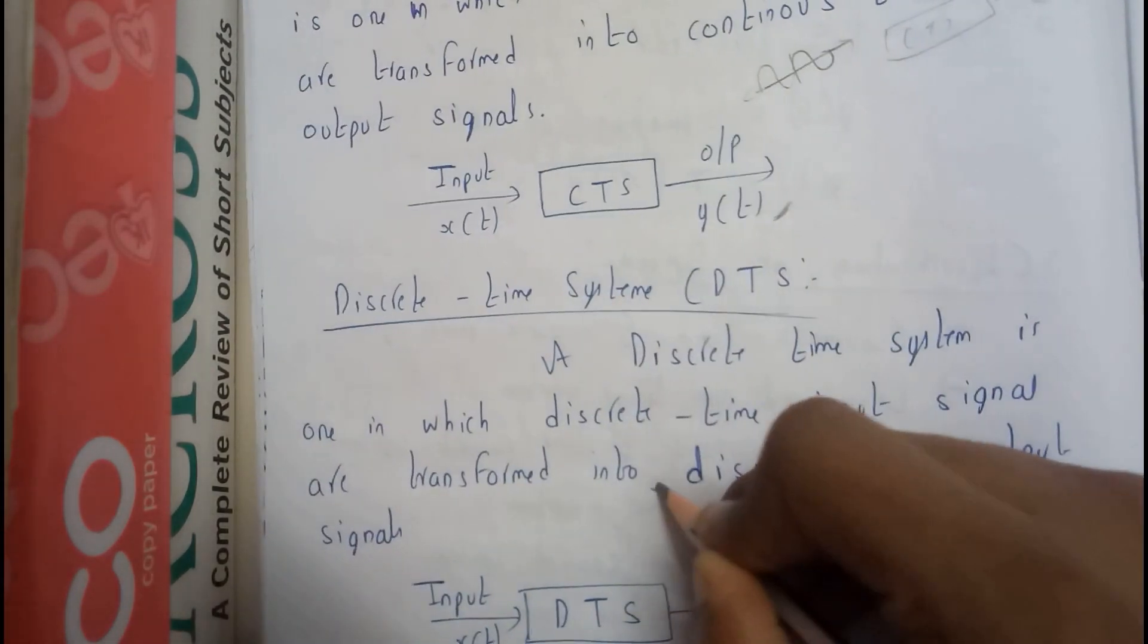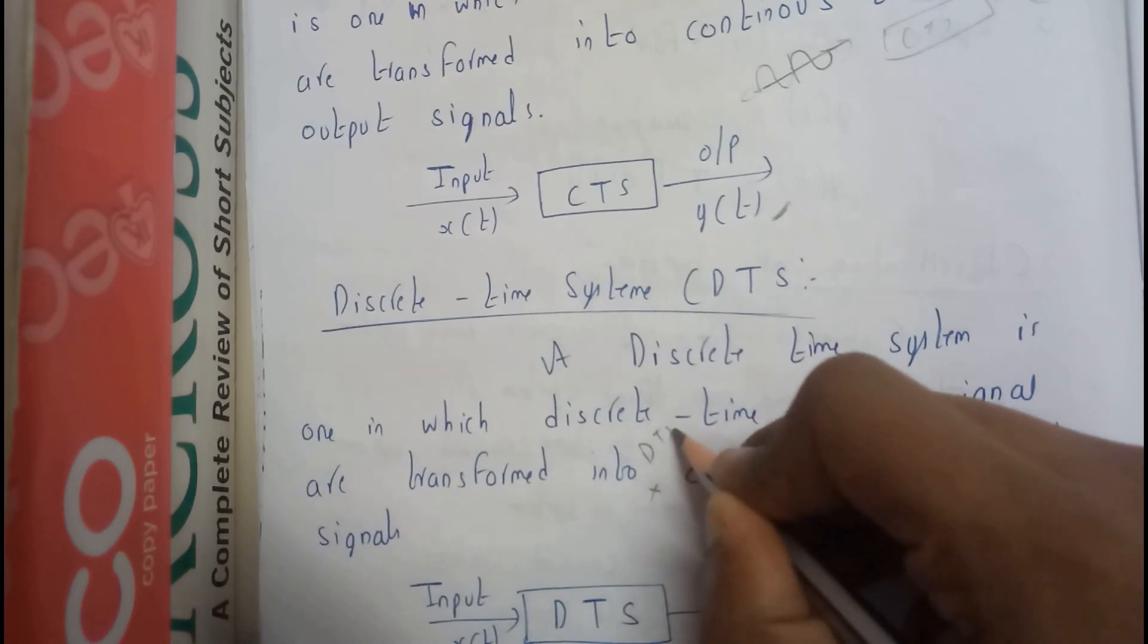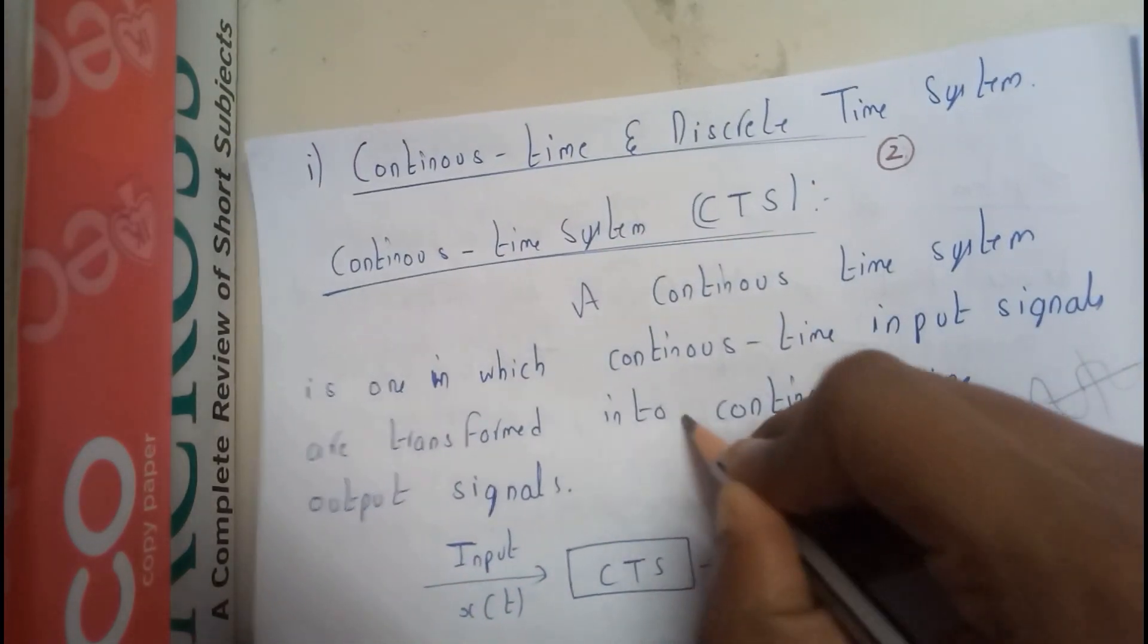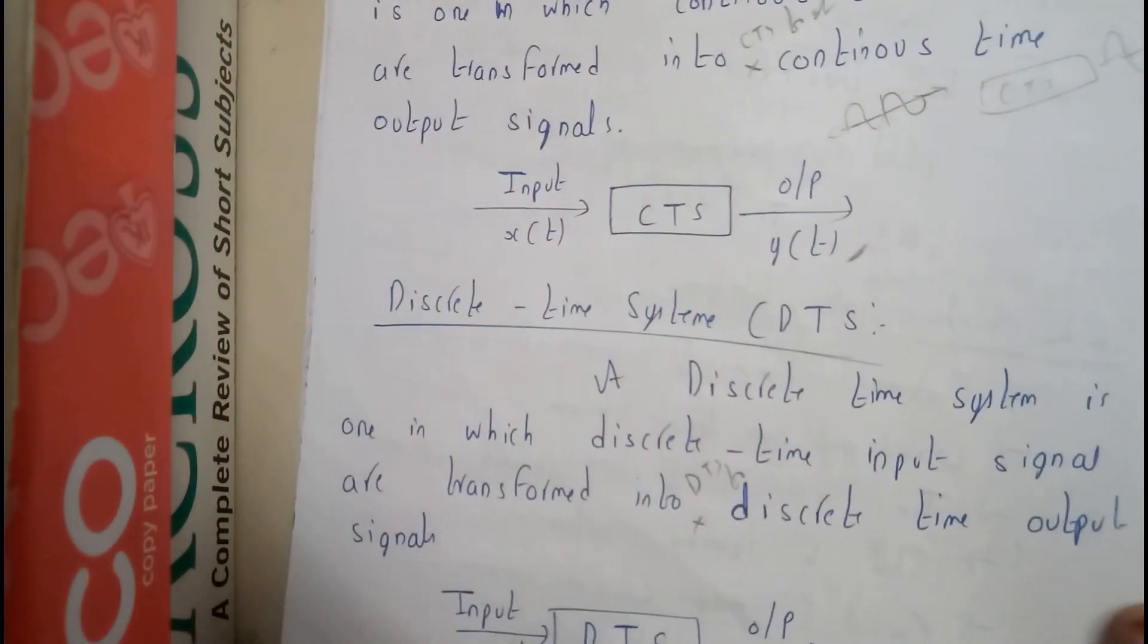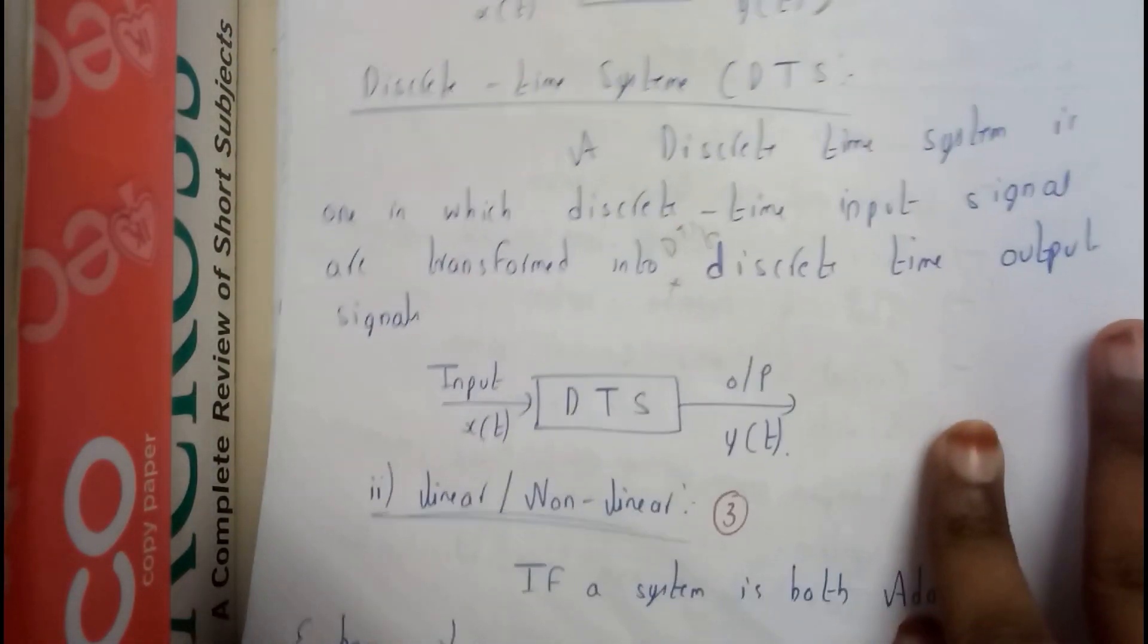I should write here, DTS to get discrete time output, and CTS to get continuous time signal. Now the sentences are really clear.